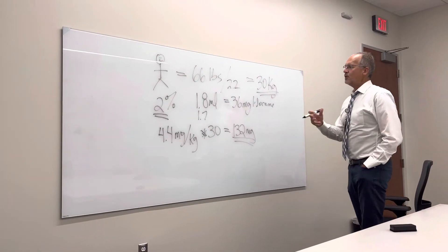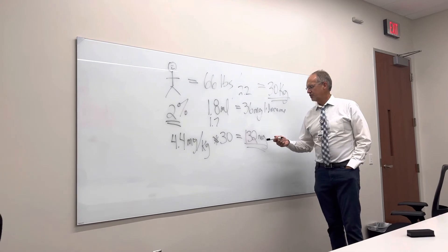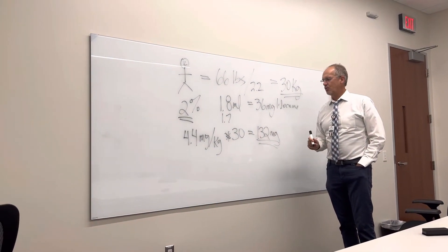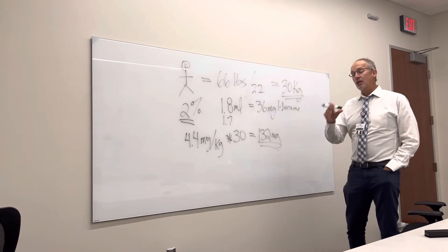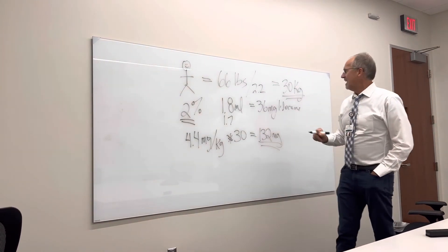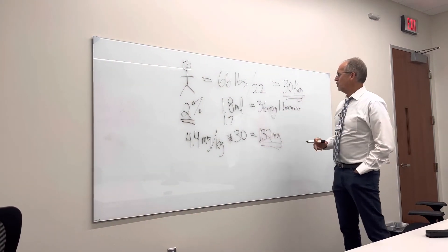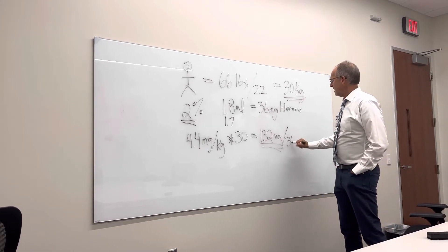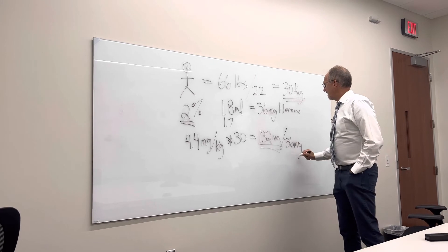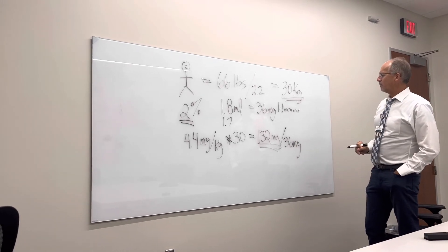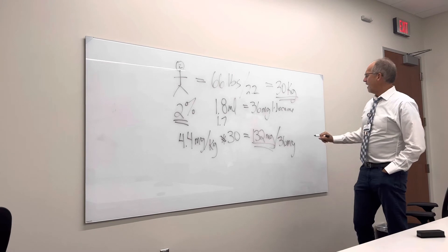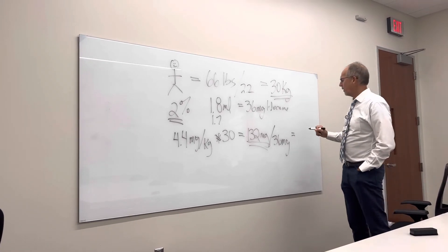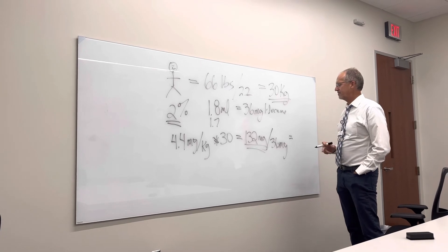Now, if you were asked a question: what is our maximum dose? And you had that as a choice, you choose 132. If it said how many carpules can you use, then you would divide 132 by 36 — the amount of drug in that carpule — and that gives you something around 3.3 carpules of the lidocaine.